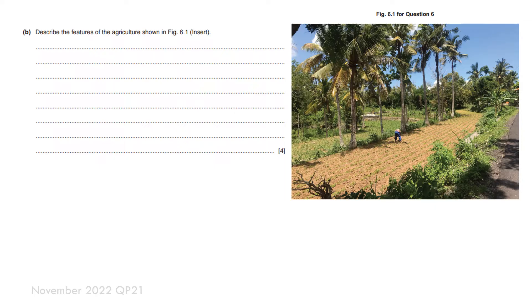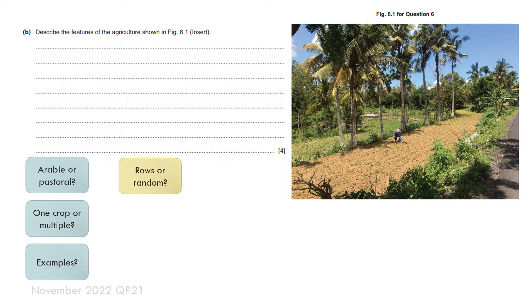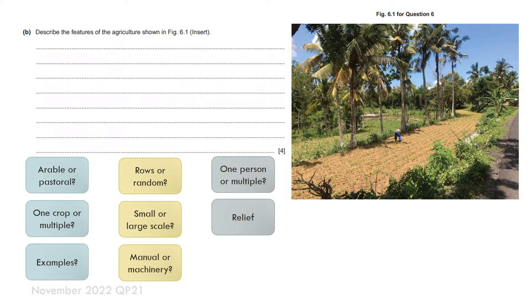The question asks you to describe the features of the agriculture shown in figure 6.1 and remember I need to identify four unique features. To start off, is it arable or pastoral? Is it one crop or multiple? Are there examples of crops that we can see? Are the plants grown in rows or is it just a random distribution? Is it small or large scale? Is it done by hand or are there obvious signs of machinery? Is it one person or multiple? Is the land flat or done on steep lands with terraces? And are there any buildings and if so what are their size and shape?